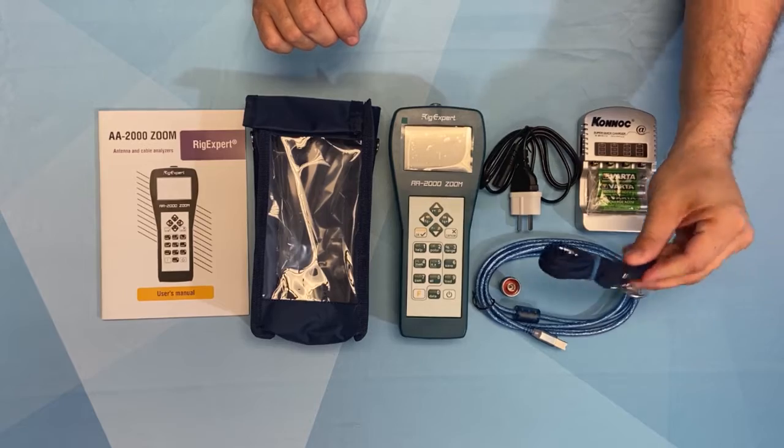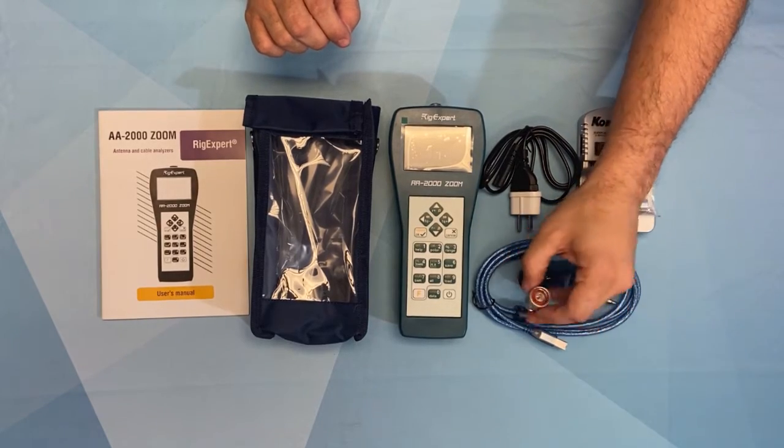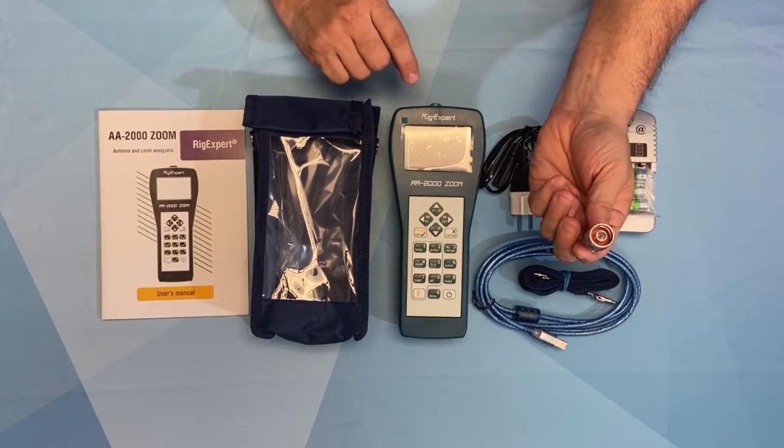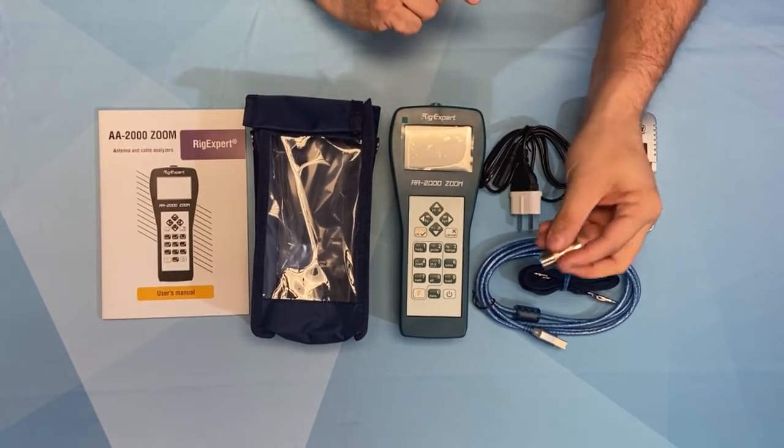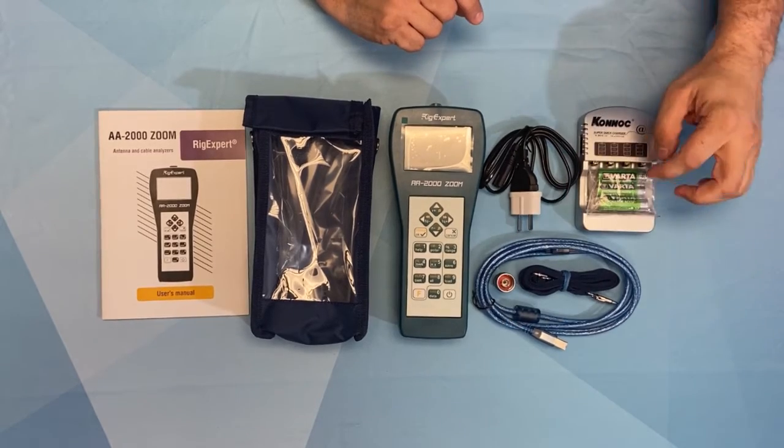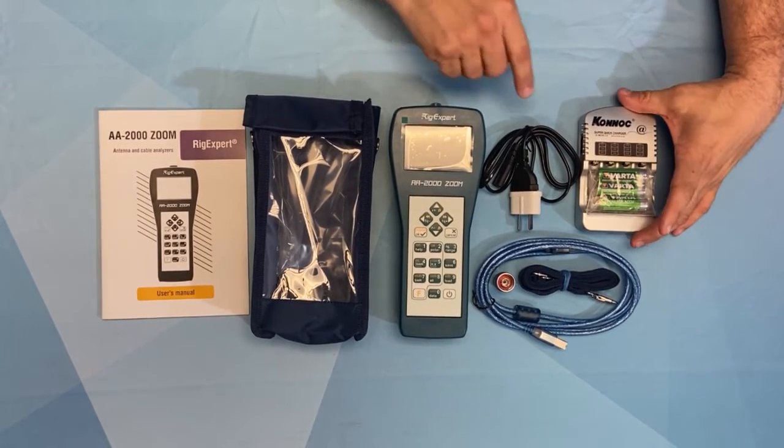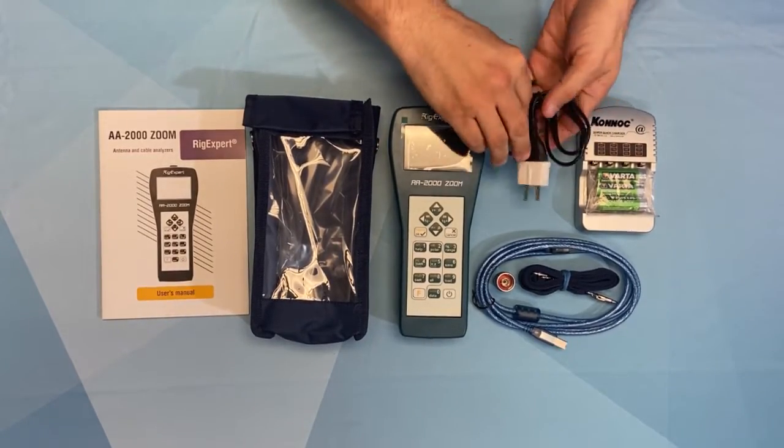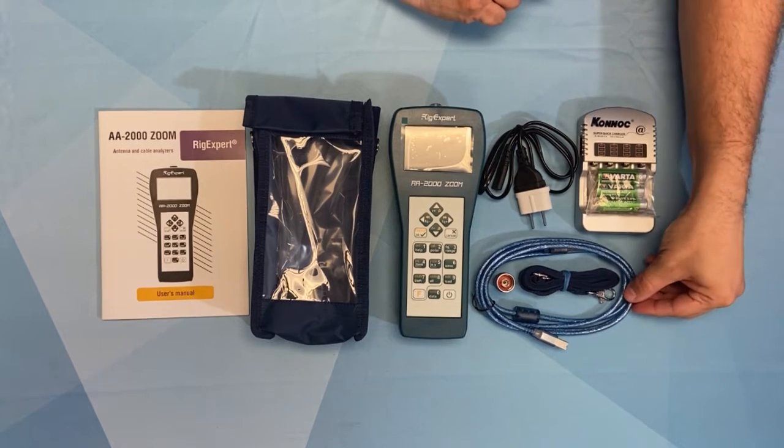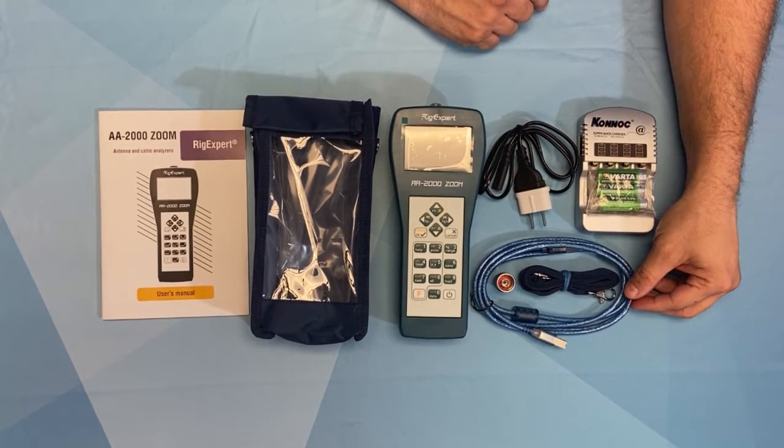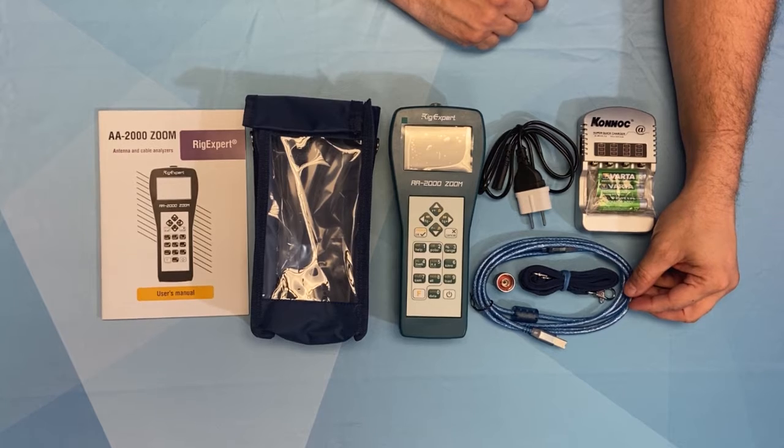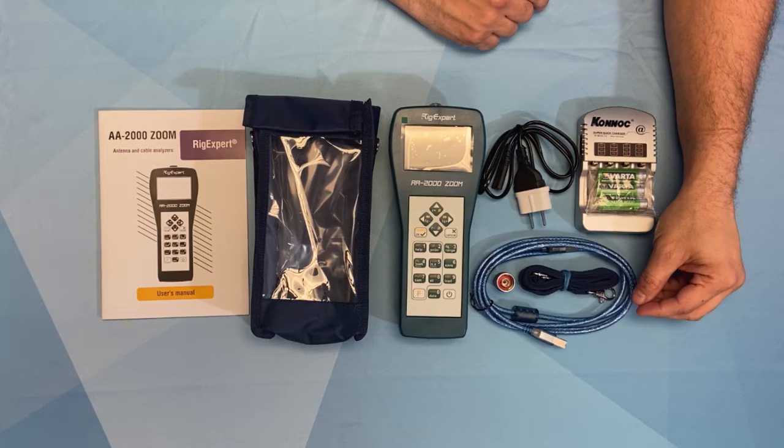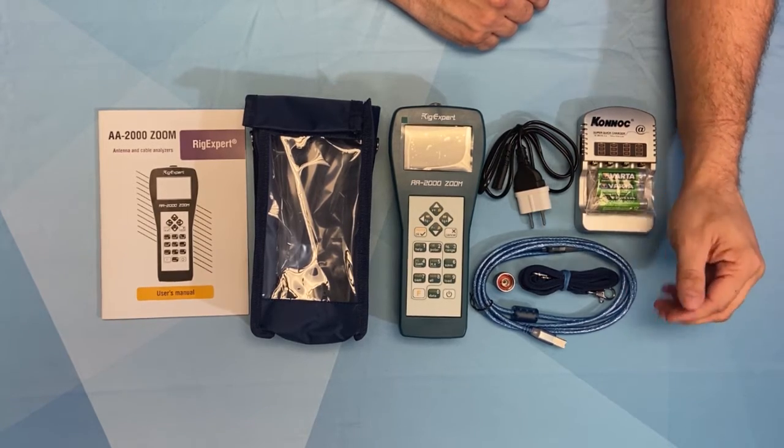Don't worry, it does have a shoulder strap. Since it has an N-type adapter on the Analyzer, you will receive also an N to SO239 adapter, three AA rechargeable batteries with your SuperQuick charger. It does come with a Euro to US adapter, and a USB 2.0 A to B cable because you can power the AA-2000 Zoom via your computer also, which does have software downloadable so you can view all your readings via PC.